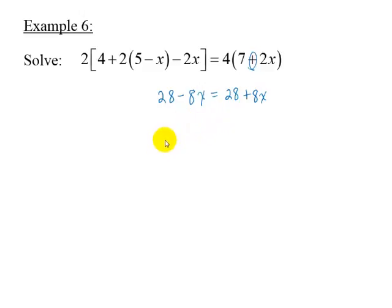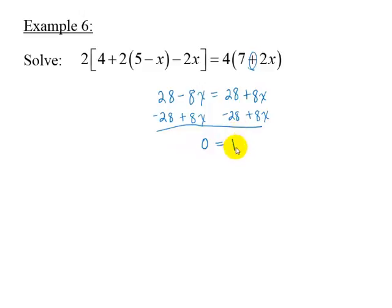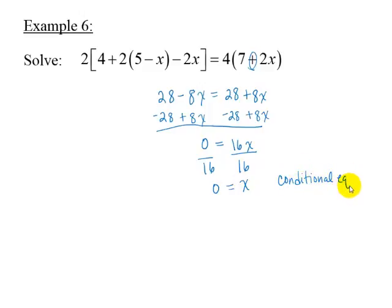To solve this equation, we add 8x to each side and subtract 28 from each side to get 0 equals 16x. Divide each side by 16 to get 0 equals x. This is a conditional equation in which the only value that makes the equation true is 0. Notice the variable was not eliminated; we were able to isolate it to one side, which gave us the solution.